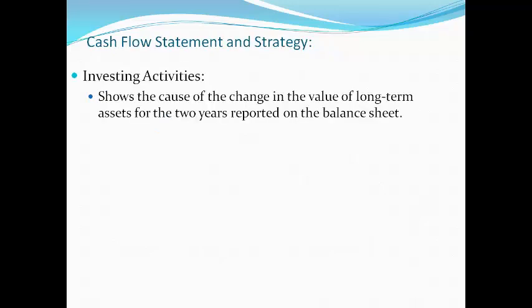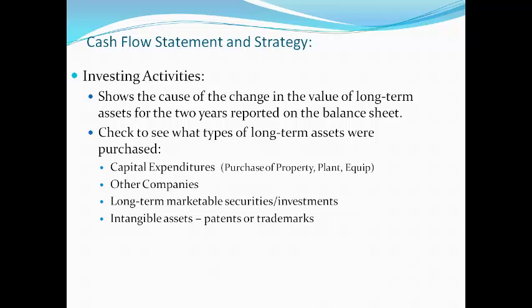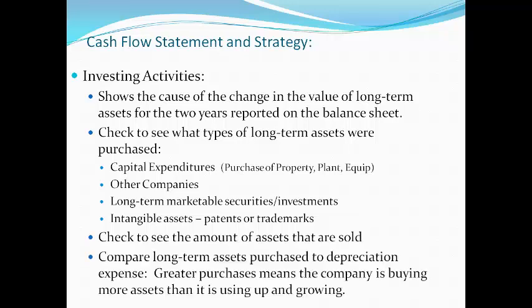The investing activity section shows the cause of the change in the value of long-term assets for the two years reported on the balance sheet. You should look to see what types of long-term assets the company is purchasing. Capital expenditures is the term used for the purchase of property, plant, and equipment. Purchases of other companies may indicate business expansion. Purchasing intangible assets can be a sign the company is protecting future operations from competitors. Capital expenditures about the same as depreciation expense means the company is just replacing assets and not growing, while more capital expenditures than depreciation expense indicates plans for future growth.